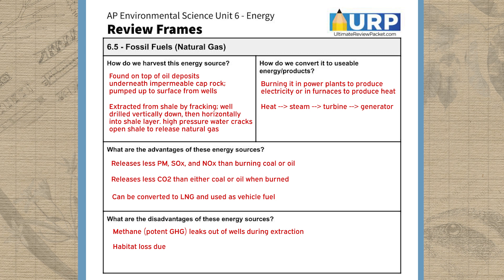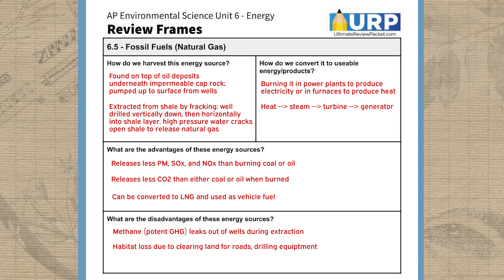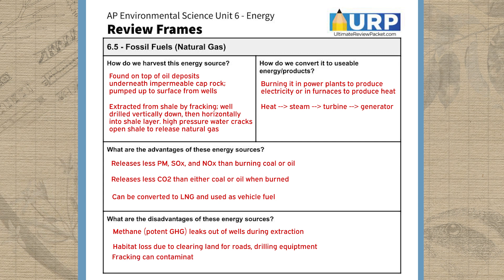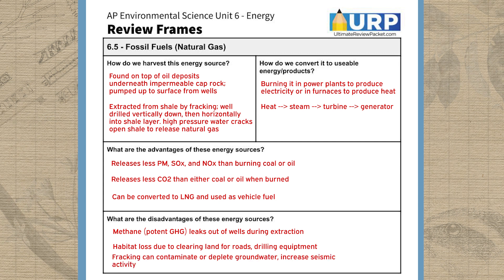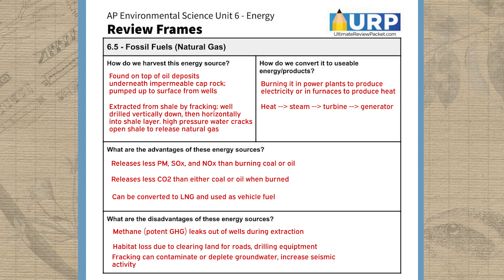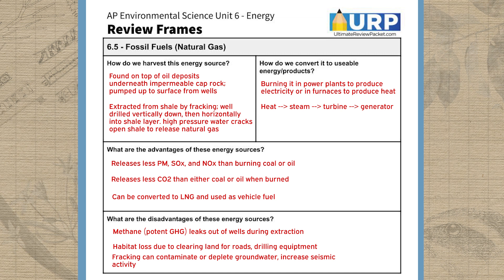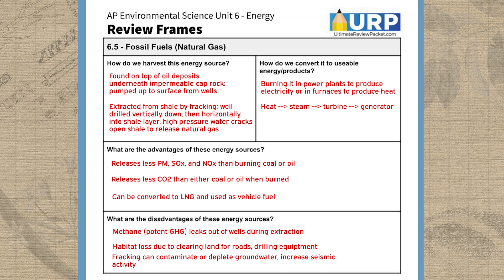As for the disadvantages, extracting natural gas allows methane to leak out of the wells, which traps far more heat per molecule in the atmosphere than CO2. Extracting it can also result in a lot of habitat loss when we clear land to transport the natural gas or bring in drilling equipment. In the case of fracking, we could have groundwater contamination with flowback fluid if our well has a leak, water depletion from local surface waters and aquifers, and the possibility of increased seismic activity or earthquakes from injecting fracking fluid or wastewater into the ground. And of course it's non-renewable, so eventually it'll run out.